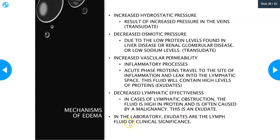In the lab, we're interested in exudates because we can do cell counts, gram stains, and Wright stains to see what type of cells are present. We can do cytology analysis to see what type of cancer cells they are, and even chemistry tests on exudates. Transudates are just a mechanical issue, so we don't usually test transudates in the lab.